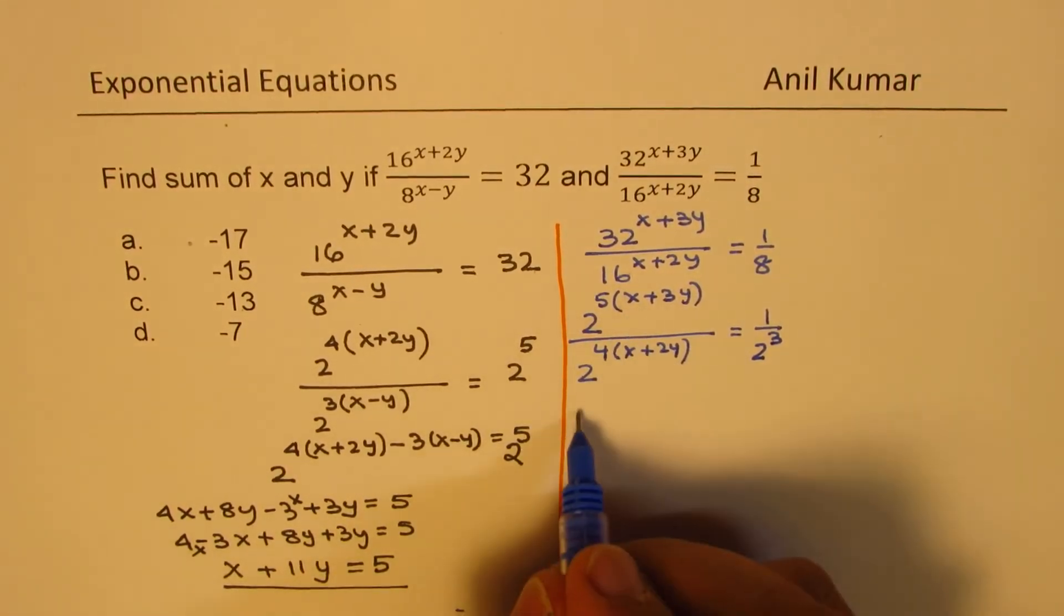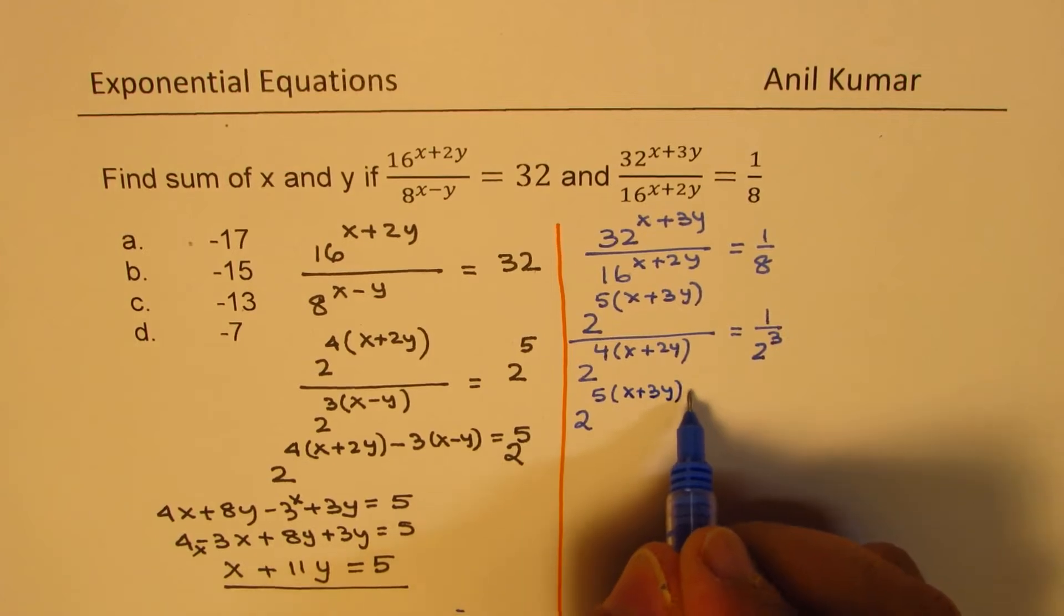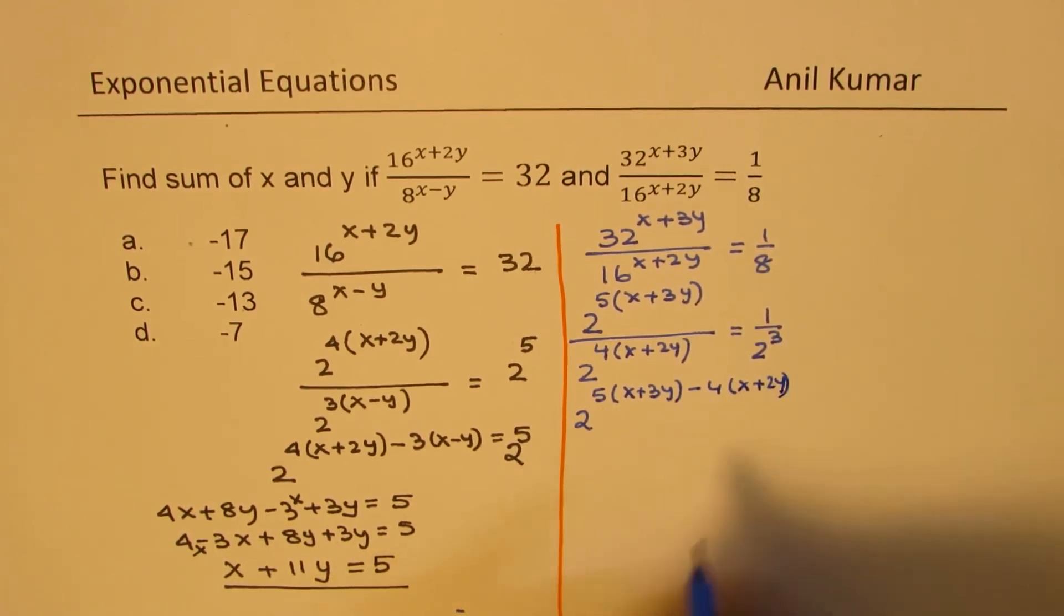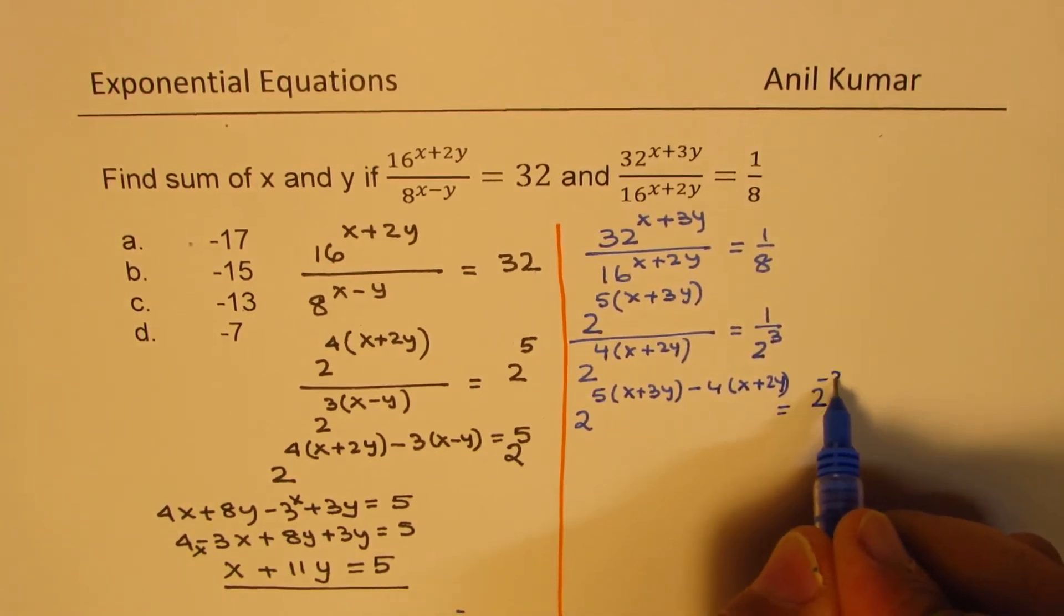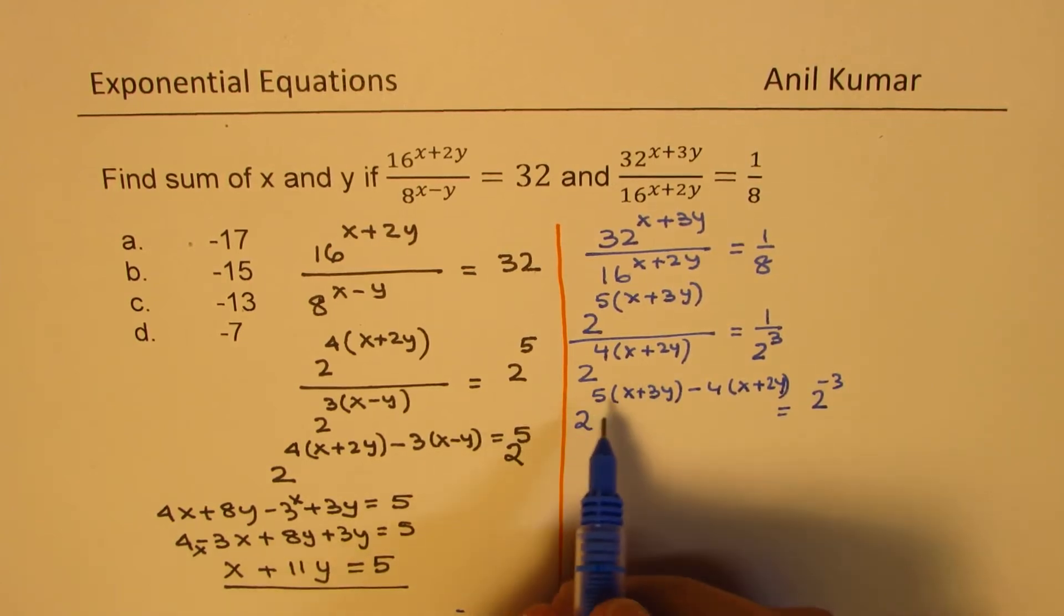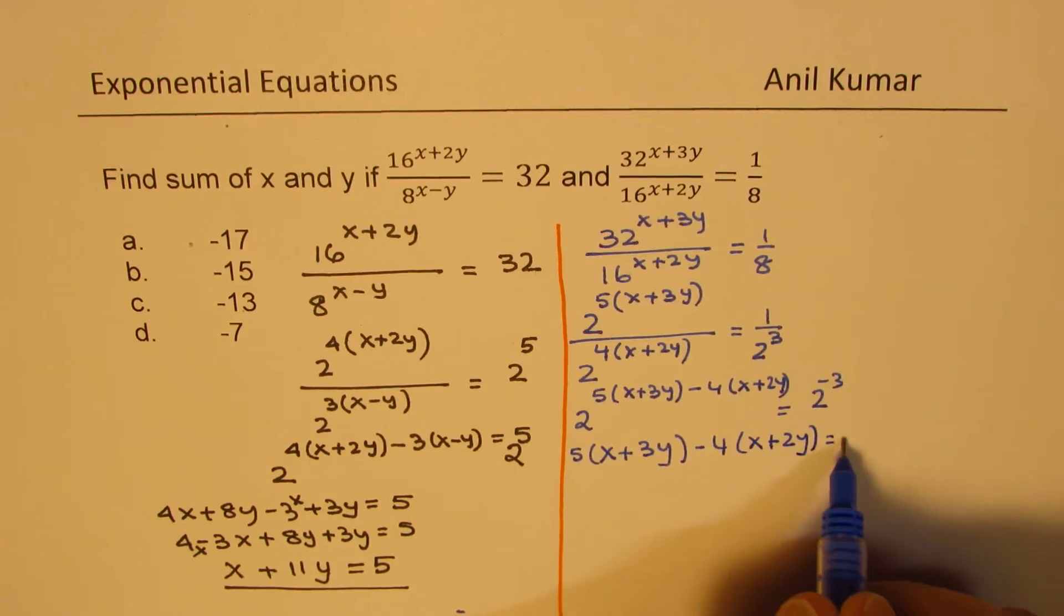Now combining, we get 2 to the power of 5 times x plus 3y minus 4 times x plus 2y equals 2 to the power of minus 3. For the same base, exponents will now be equated, so we get 5 times x plus 3y minus 4 times x plus 2y equals minus 3.